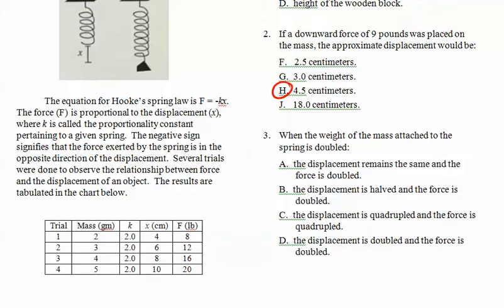When the weight of the mass attached to the spring is doubled. What happened? The weight of the mass is doubled. Displacement remains the same. No. Displacement is halved. No. Displacement is quadrupled. No. Displacement is doubled. All right. 8 to 16 gets us 4 to 8. Doubled.